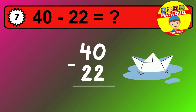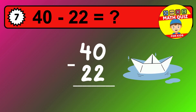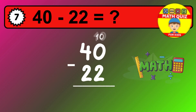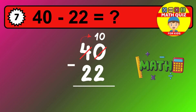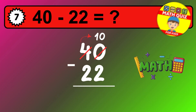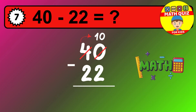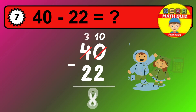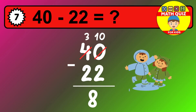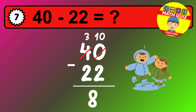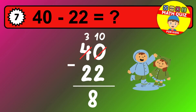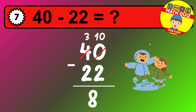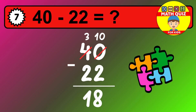Let's solve this step by step. We start with the units. 0 minus 2 is not possible, so we need to regroup. We take one 10 from the tens column. Now we have three tens, and the units become 10. Now we subtract. 10 minus 2 is 8. Then we go to the tens. 3 minus 2 is 1. The final answer is 18.